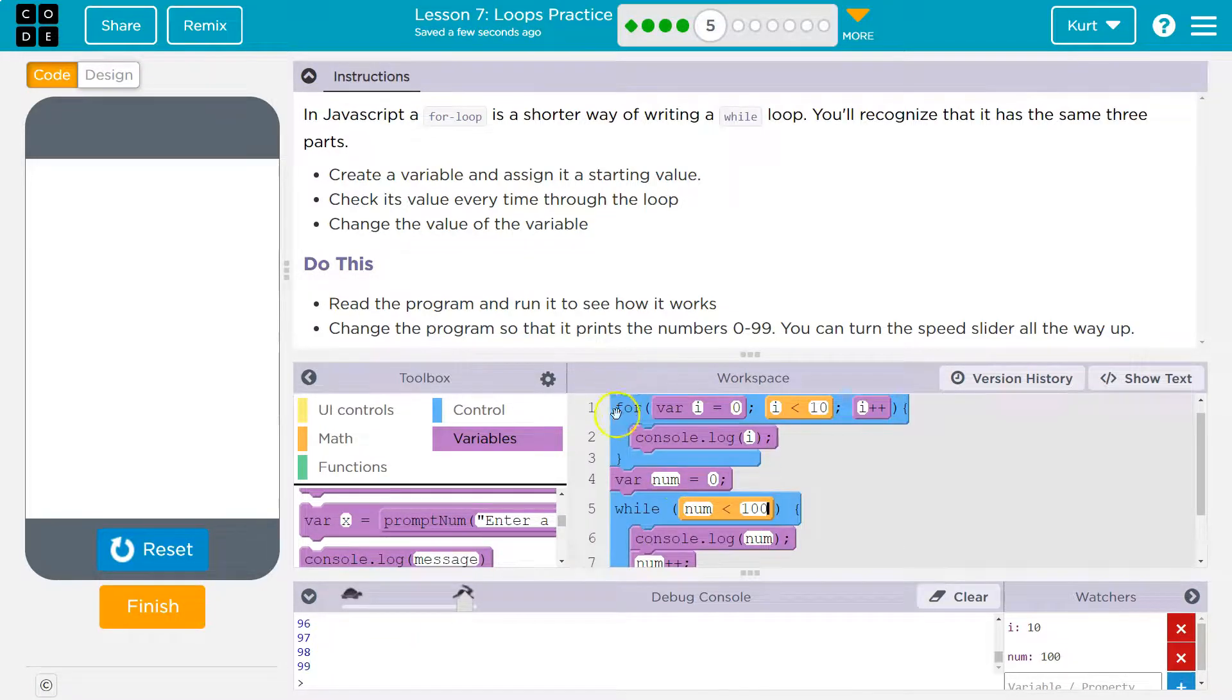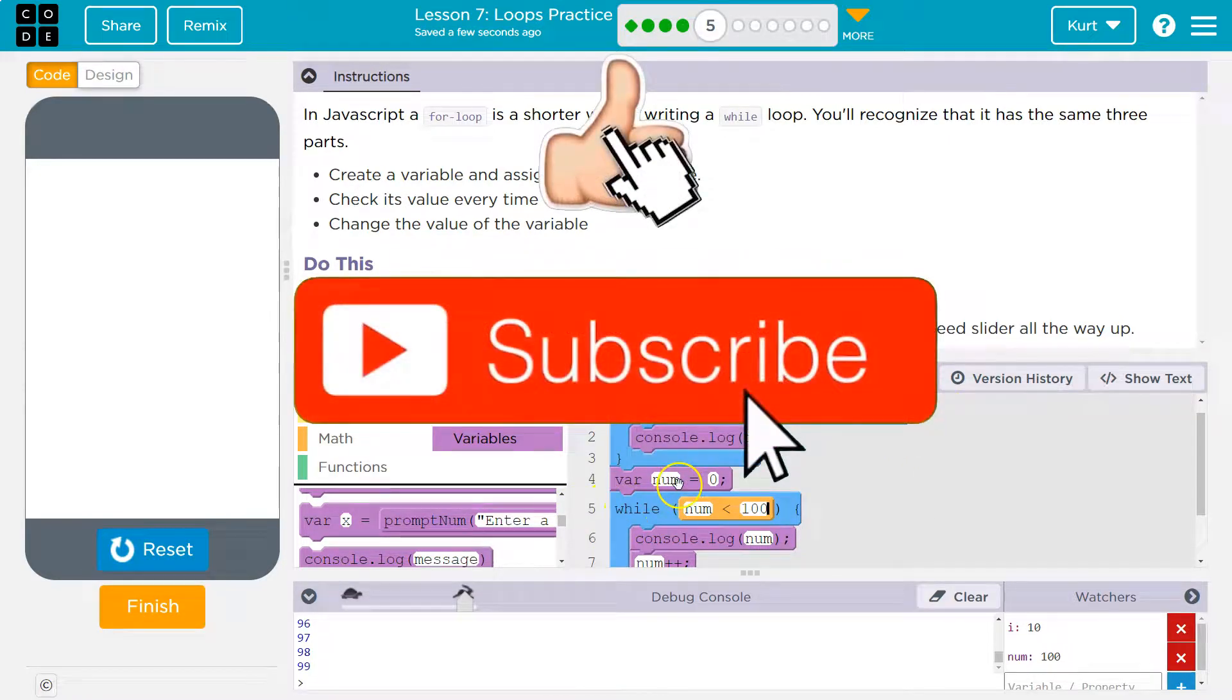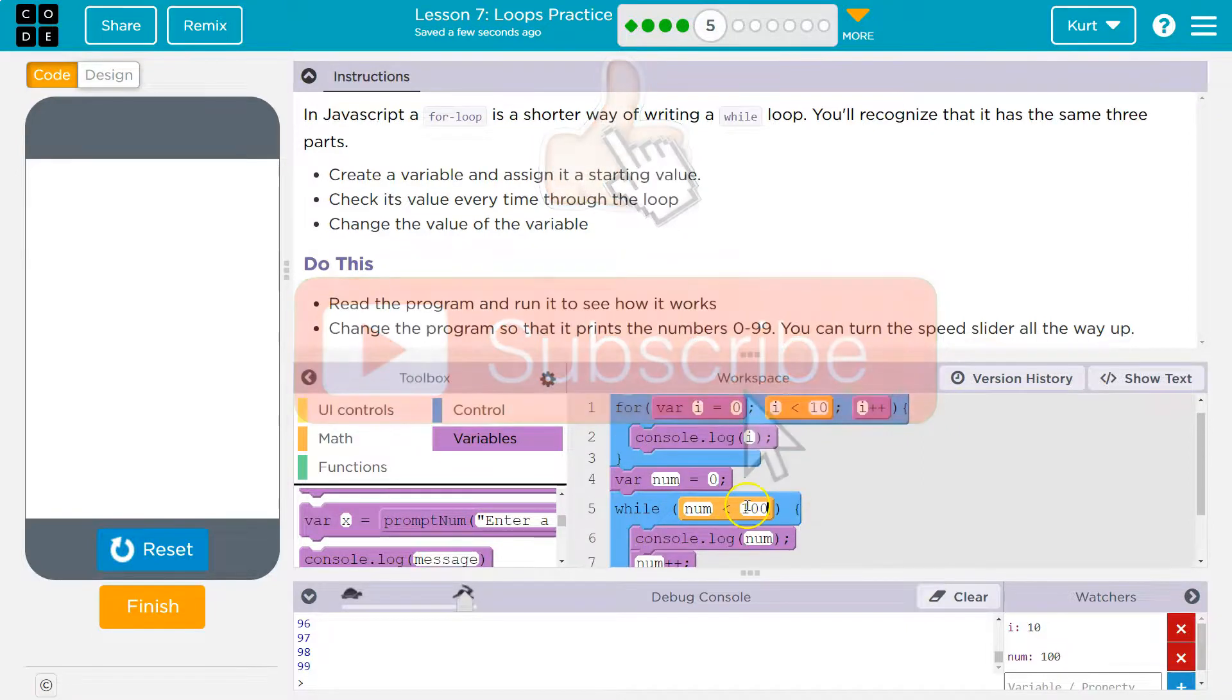And they're just pointing out how this is shorthand, right? We can keep all of this in this neat little one line rather than having var num declared here, and then num++ here, and then less than here. So for loops are super handy. Onward.